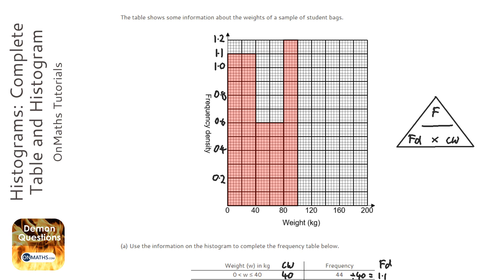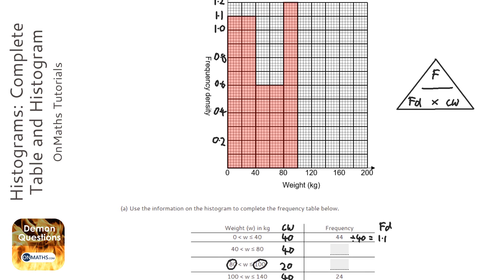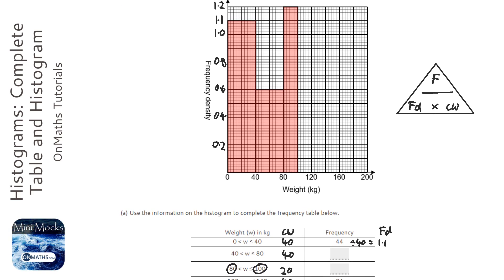So now I know my frequency density, so I can actually work out what the next frequencies are. So the next one has a frequency density of 0.6, so I'm going to times that by 0.6, because this is our frequency density, times that by 0.6, so I'm going to do 40 times 0.6, which is 24.